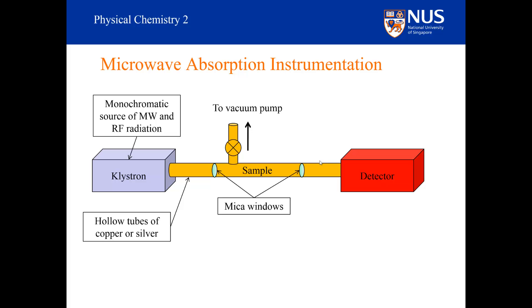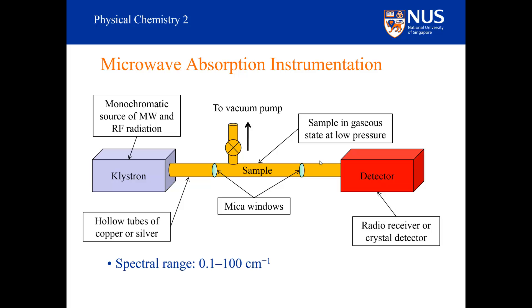The central section of the tube is separated from the rest of the instrument by mica windows. Mica is a silicate mineral that forms wonderful laminar sheets. It is useful for us in constructing this instrument because mica is transparent to microwave radiation. The central section can then be evacuated using a vacuum pump and the sample can then be introduced as a gas at low pressure. The detector is simply a radio receiver or crystal detector.